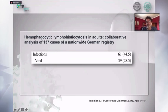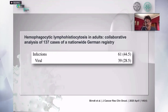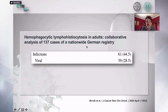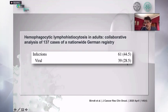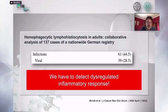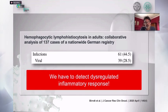Hemophagocytic lymphohistiocytosis (HLH) is a very important entity in viral infections. Thirty percent of patients in a German registry developed this HLH syndrome, which is a cytokine release syndrome — a hyperinflammatory syndrome due to viral infections. Almost one-third of patients developed it. So it is also important to detect and monitor dysregulated inflammatory response in these patients, for which purpose procalcitonin can also be used.